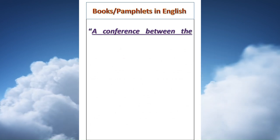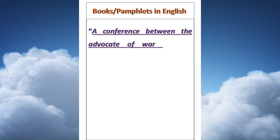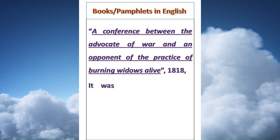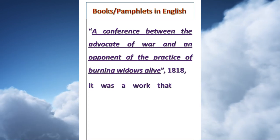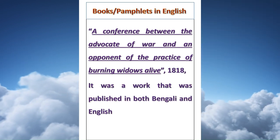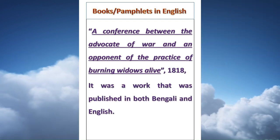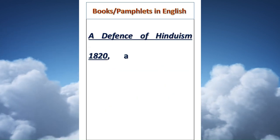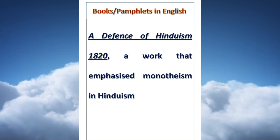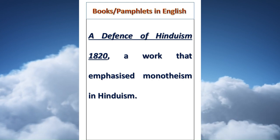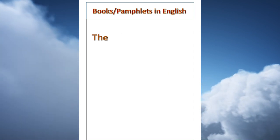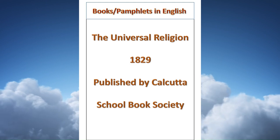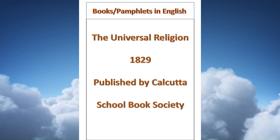A Conference Between the Advocate of War and an Opponent of the Practice of Burning Widows Alive (1818) was published in both Bengali and English. A Defense of Hinduism (1820) emphasized monotheism in Hinduism. The Universal Religion (1829) was published by the Calcutta School Book Society.